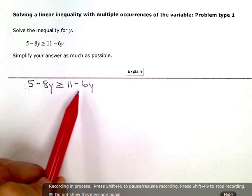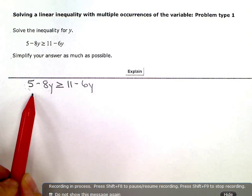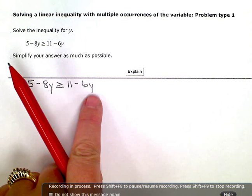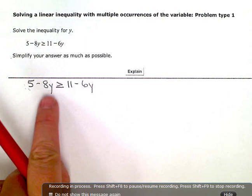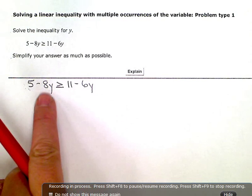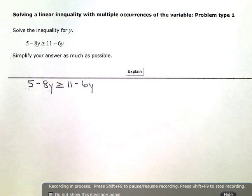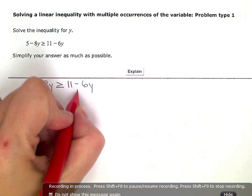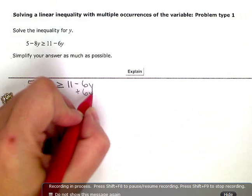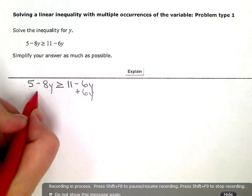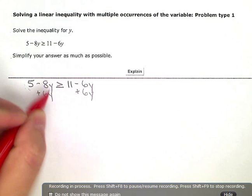So, I can go ahead and start my solving process here. Since I have variable terms on both sides, I want to keep the variable term on the left. So, I need to zero this one out right here. I don't want variable terms on both sides. So, I'm going to add 6y to both sides so that this one zeroes out.